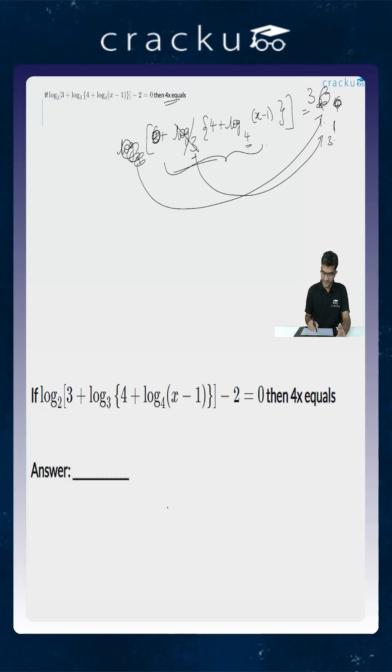Now we will subtract 4 from both sides, because now we have 4 plus this. So if you are subtracting 4, this becomes equal to minus 1. Just to write it in a new line, we have log of, the base is 4, x minus 1 is equal to minus 1.